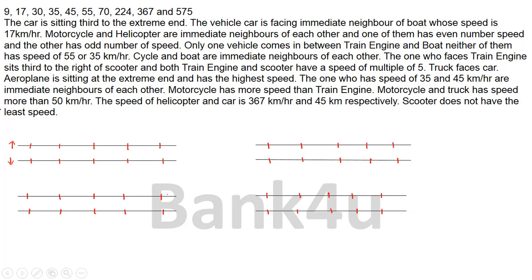Let's solve it. The first clue: car is sitting third from the extreme end. With five persons in each row, third from either extreme end is the middle third position. So car can be at this place in the top row, or at the corresponding third position in the bottom row — two possibilities.